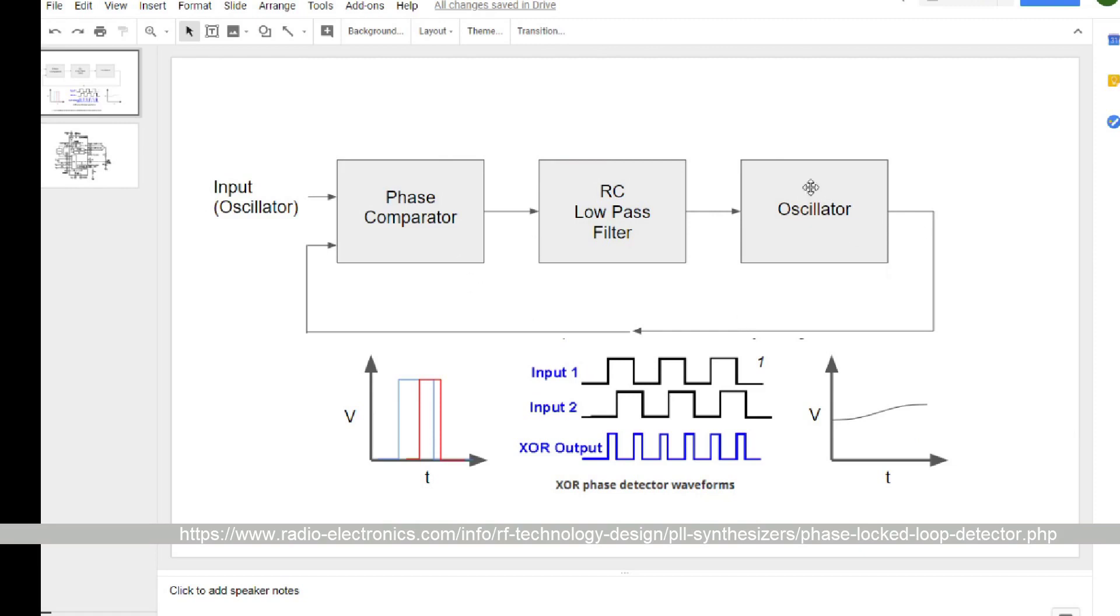So that oscillator is then controlled by the DC voltage, and it's fed back into the comparator. So it's constantly updating, it's constantly asking itself, am I going at the same frequency as the oscillator that's coming in?